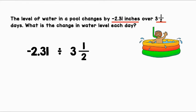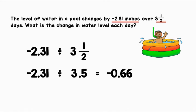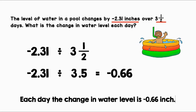We have one decimal and one mixed number, so let's make sure that they're both in the same form. We have negative 2.31 divided by three and one-half. Three is a whole number, and one divided by two is 0.5. We know our answer is going to be negative because we have one negative and one positive. We will get negative 0.66. Each day, the change in water level is negative 0.66 inch.